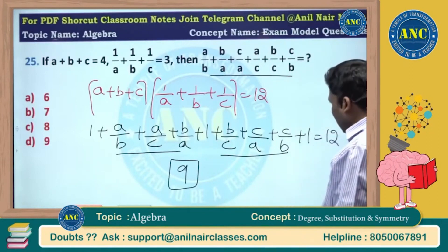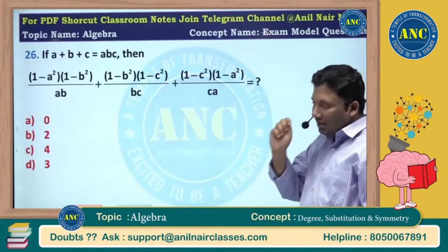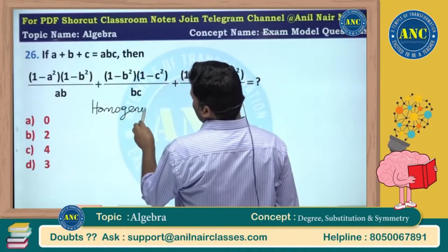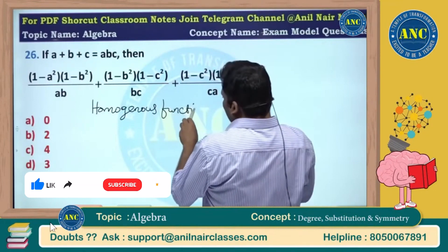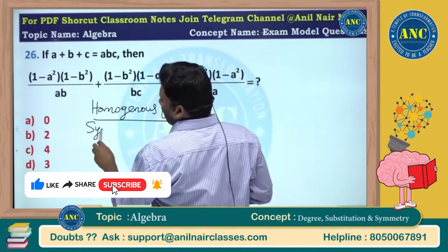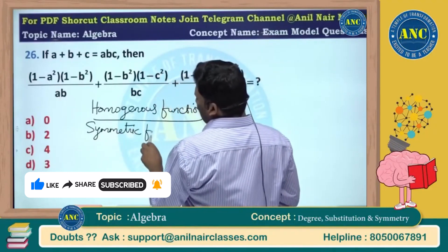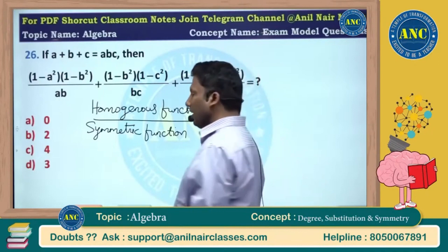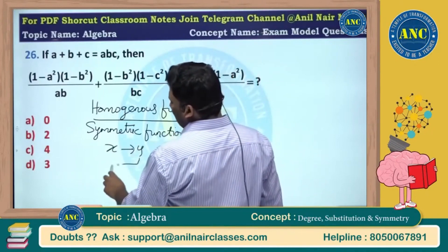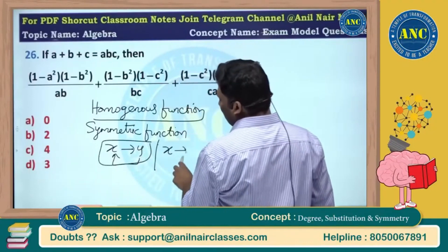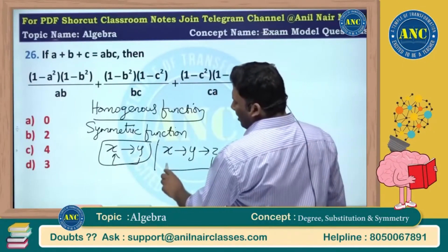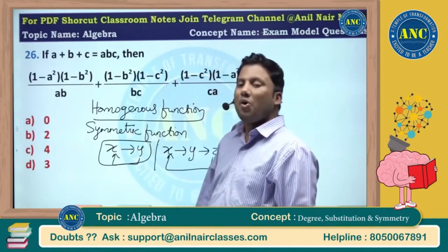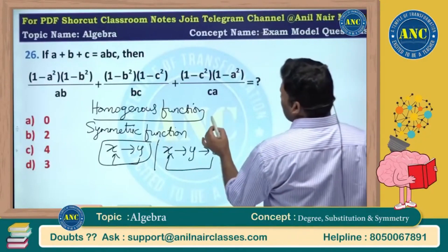I hope the idea is clear. Now we are talking about homogeneous functions. What is a homogeneous function? They are also called symmetric functions. If X is replaced with Y and Y is replaced with X, then the function does not change. If X is replaced with Y, Y with Z, Z with X, the function does not change. That kind of function is called a homogeneous or symmetric function.